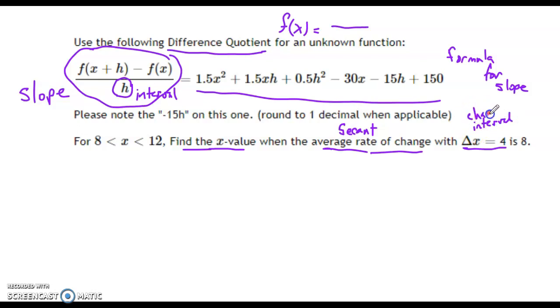So change of x, interval, that's what we're playing with. Another way of saying this, using the letter up here, this is the same thing as h is equal to 4. So we're looking for slope of secant. We've got an interval size at h value of 4.